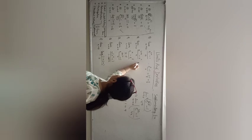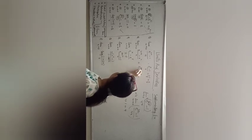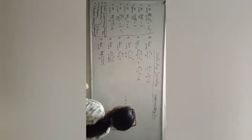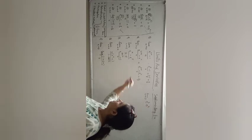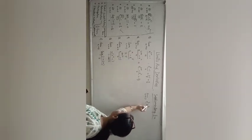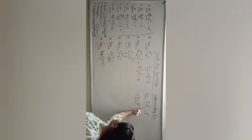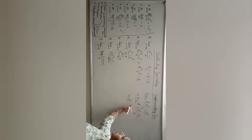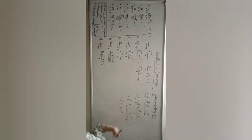Next: limit x→0 of (e^(2+x) - e²)/x. Putting x=0 gives e²-e²=0 over 0, indeterminate form. We write e^(2+x) = e² times e^x. So the expression becomes e²(e^x - 1)/x. Since e² is constant, take it out: e² times limit x→0 of (e^x - 1)/x = e² times 1 = e².